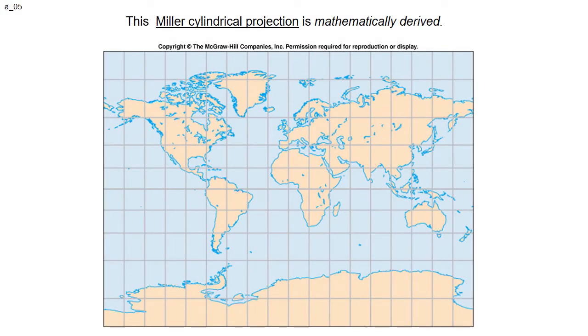Here's another example: Miller's cylindrical projection, which also stretches things out in the high latitudes.